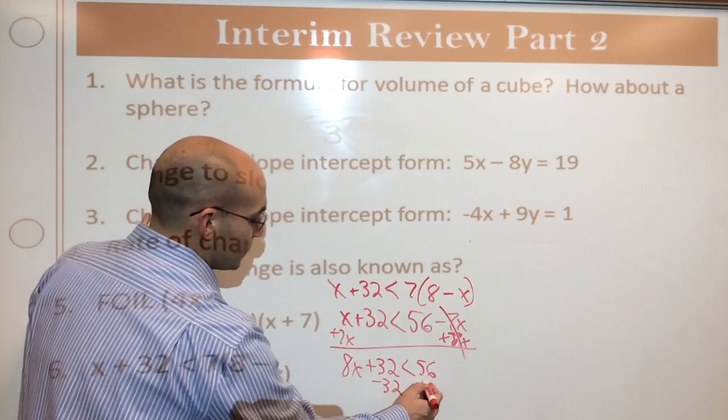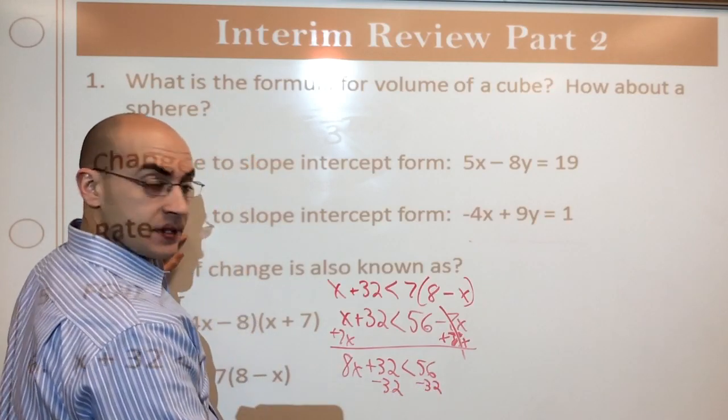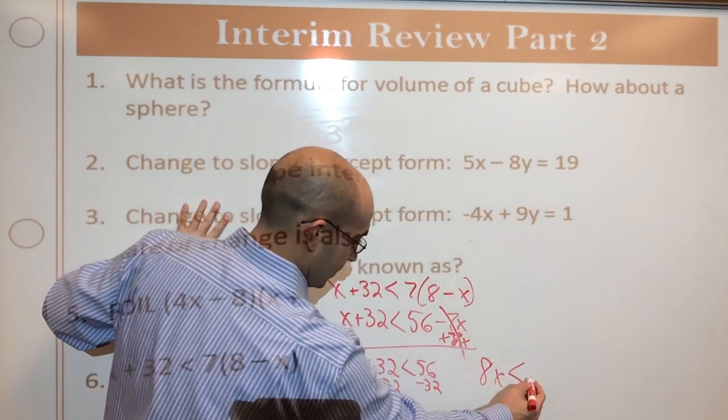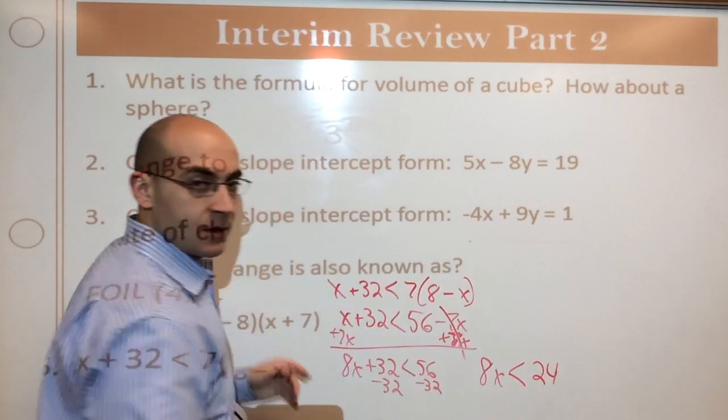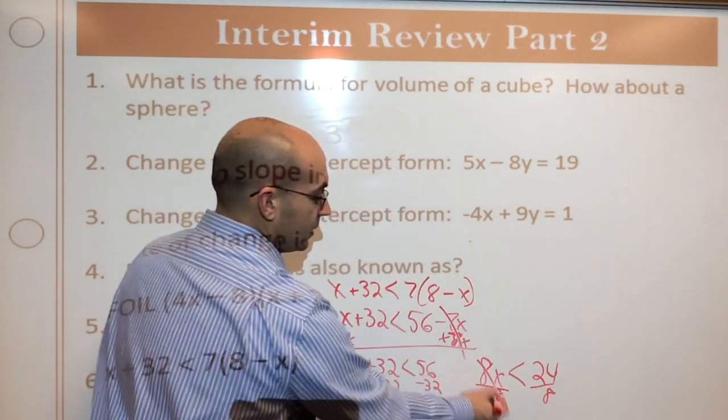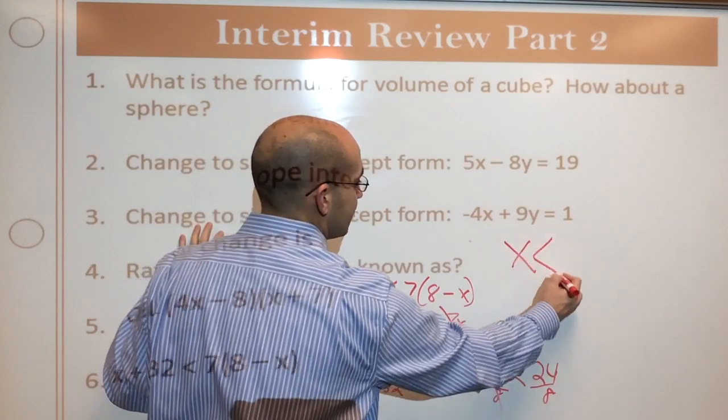That doesn't make any sense. Because 8x plus 32 is less than 56. Subtract 32 on both sides. And hopefully you can still see that. I'm going to just go over here with it. 8x is going to be less than 24. Okay. So we're still doing it like in its equation. Divide by 8 on both sides. Okay. When I do that, I'm left with x is less than 3.